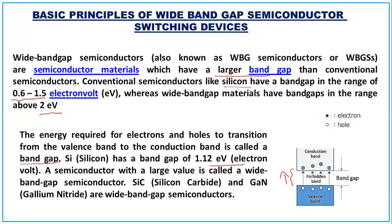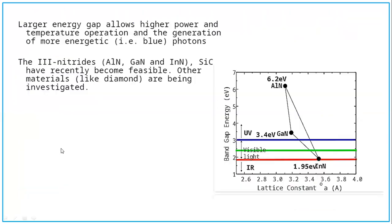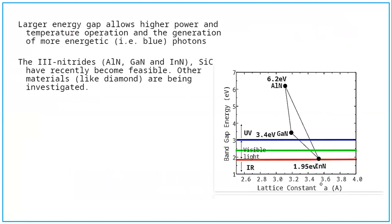A semiconductor with a larger band gap value is called a wide band gap semiconductor. The best examples are silicon carbide and gallium nitride. According to your KTU syllabus, this can come as a three-mark or maximum five-mark question. You should draw the diagram and write about the band gap — it has a larger band gap — then write about the advantages.